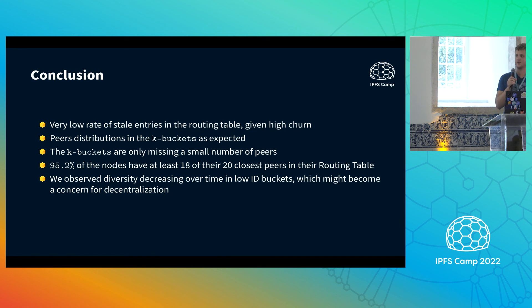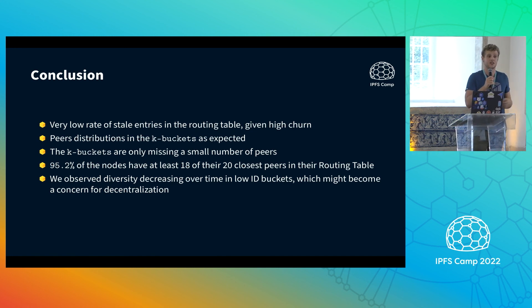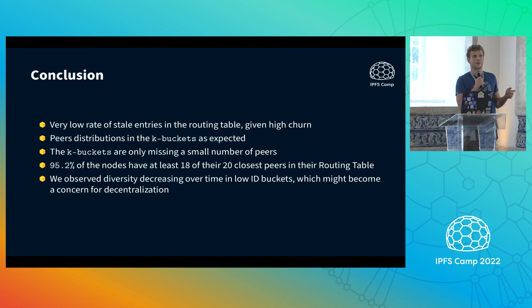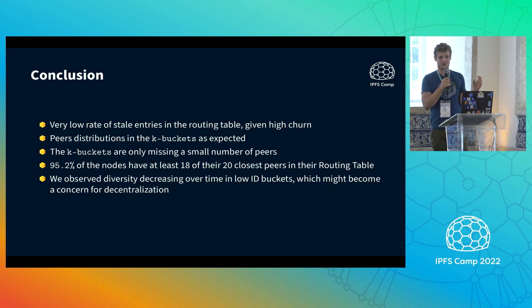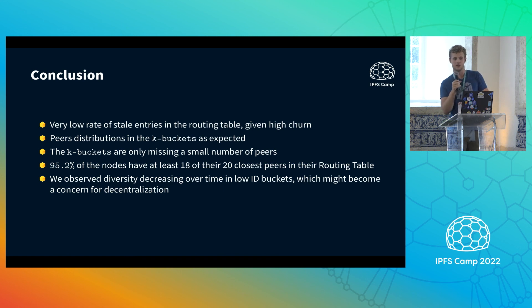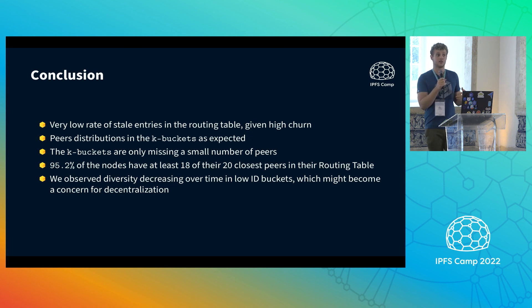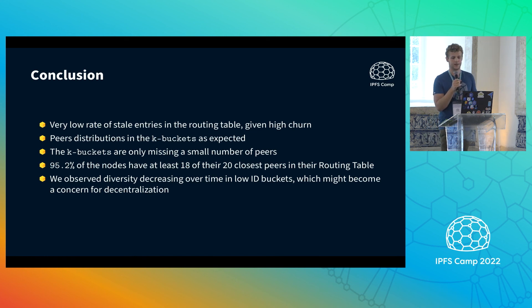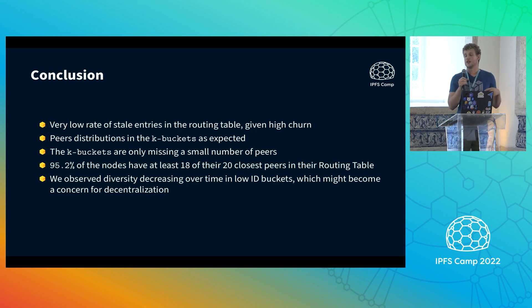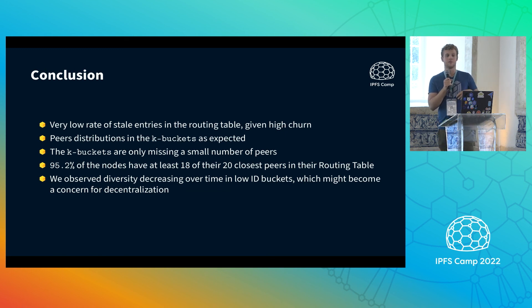To conclude: the DHT is in very good shape. We know all of the peers close to us and there is a very low rate of dead peers or stale entries in the network. The distribution inside the K-buckets is as expected — we can see the exponential decrease as the bucket index increases. The only concerning thing is that we lose diversity over time, but there are solutions to tackle this and it is not critical at the moment.